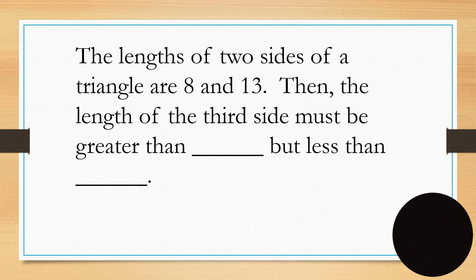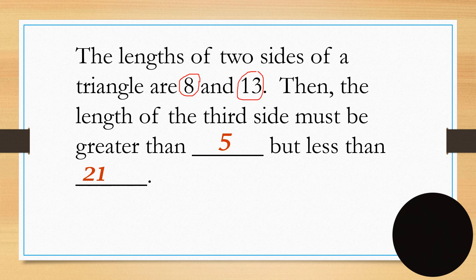Now, the lengths of two sides of a triangle are 8 and 13. Then, the length of the third side must be greater than 5, but less than 21. So, if given a first length side and the second side, the measurement, you can predict the third. So it must be, if you have 8 and 13, it must be greater than 5, but less than 21.